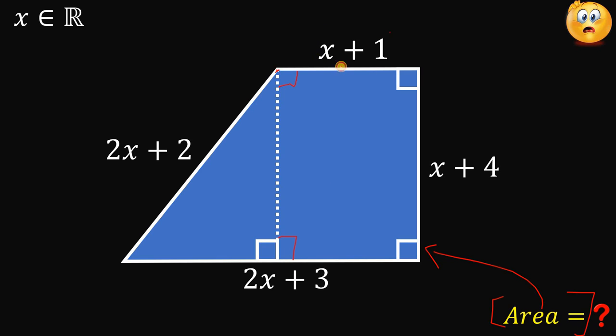So, since it is a rectangle, if this side is x plus 1, the other side, the opposite side, is also x plus 1, of course. Now, if this is x plus 1, and the total is 2x plus 3, so the other side or the other length must be equal to x plus 2.